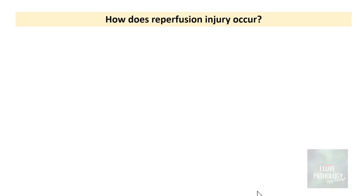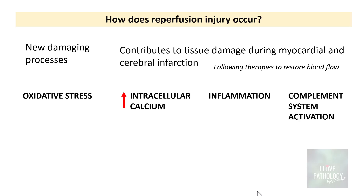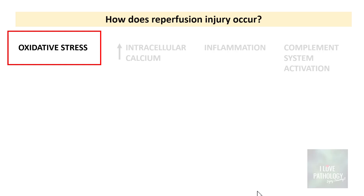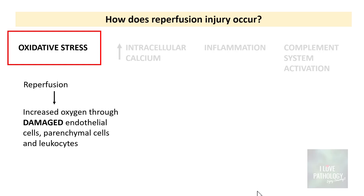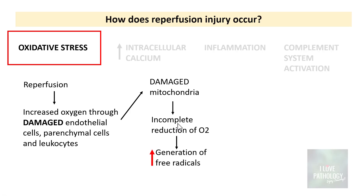Why or how does ischemia reperfusion injury occur? The most common reasons are: oxidative stress, intracellular calcium increase, inflammation, and activation of the complement system. Regarding oxidative stress, reperfusion results in increased delivery of oxygen through damaged endothelial cells, parenchymal cells, and leukocytes. Because of ischemia, the mitochondria is already damaged, and this damaged mitochondria cannot handle this oxygen — there is incomplete reduction of oxygen, which means there is increased generation of free radicals. So during reperfusion, there is increased generation of free radicals.